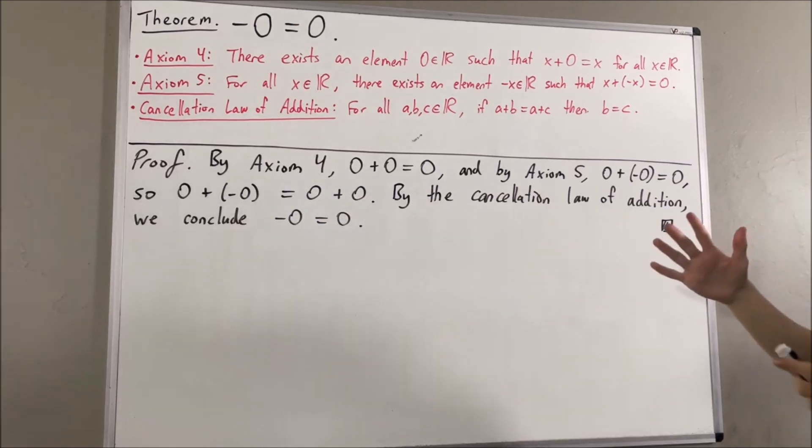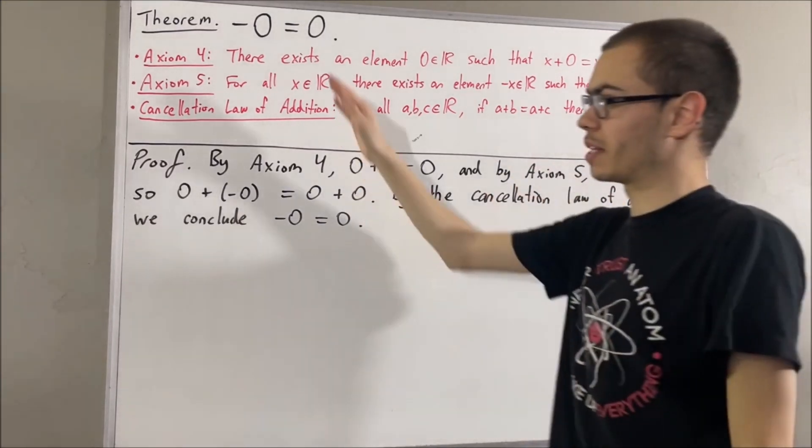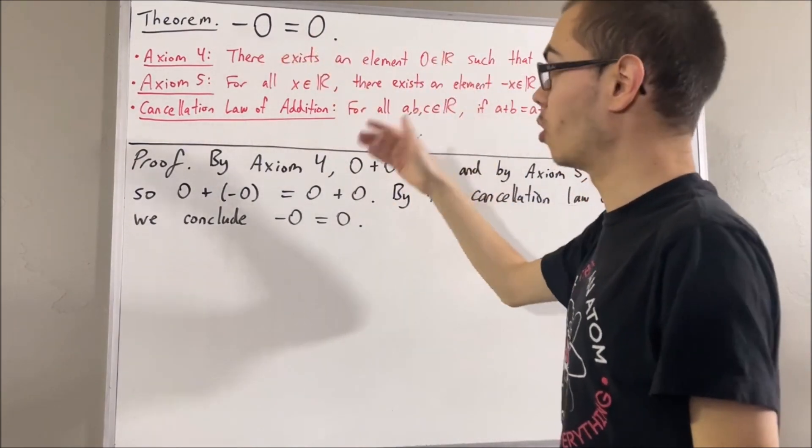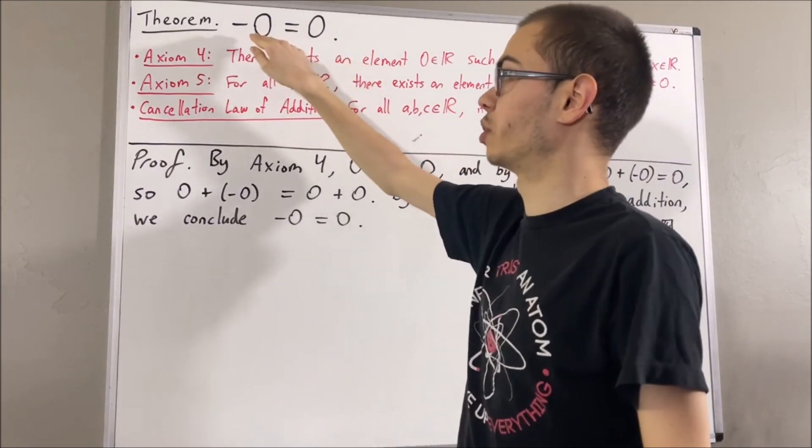Now, from experience, we also know that zero is the only real number with this property. That is, zero is the only real number with the property that zero is equal to the negative of itself.